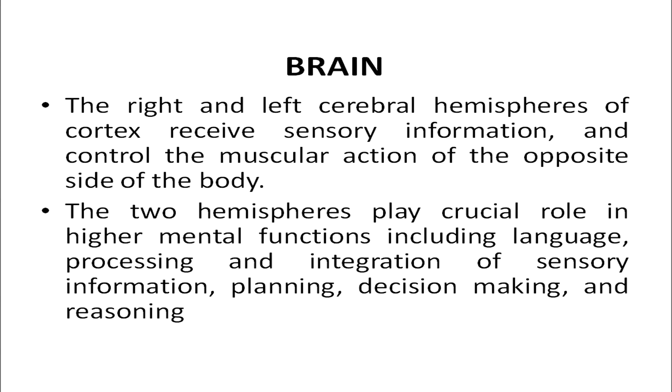The right and left cerebral hemispheres receive sensory information and control the muscular action of the opposite side of the body. The two hemispheres play a crucial role in higher mental functions, which include language, processing and integration of sensory information, planning, decision making, and reasoning. In today's lecture we discussed the structure of the nervous system — the central nervous system and the peripheral nervous system — and how the various structures of the brain are related to each other and their functions.